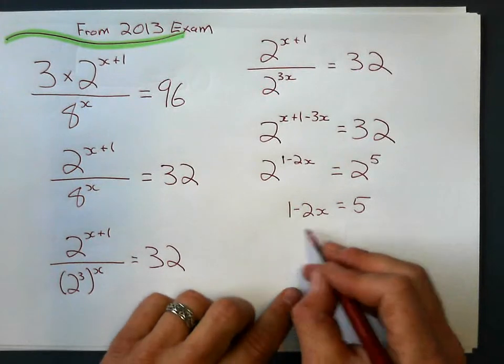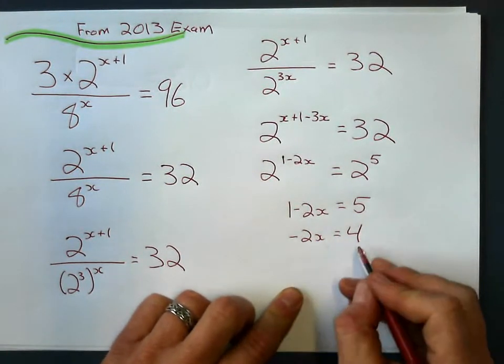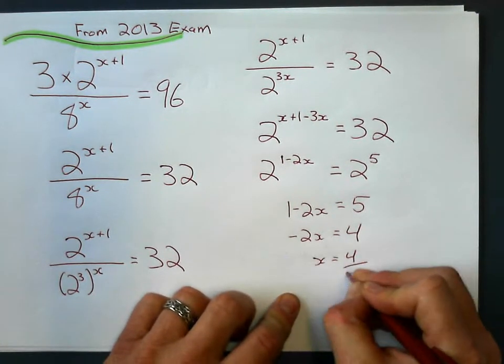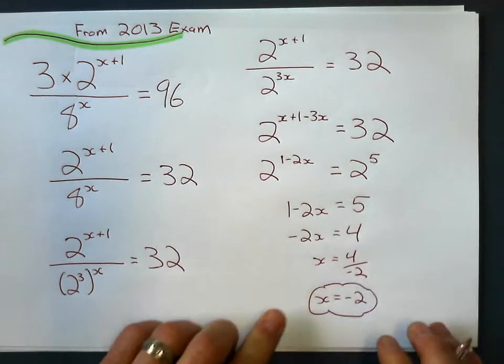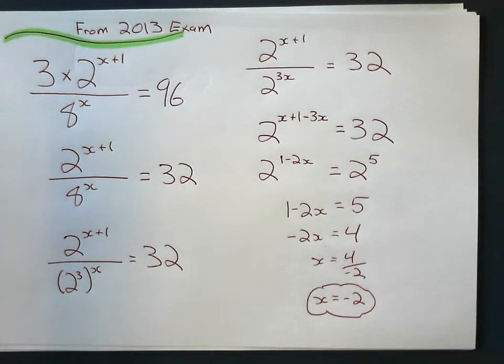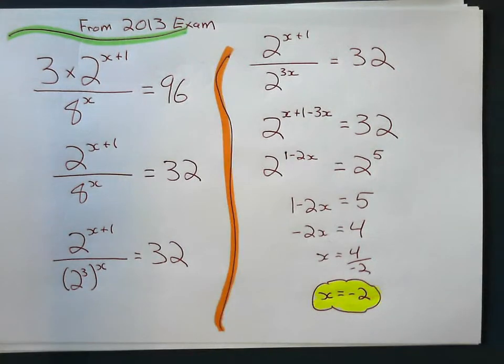I could handle that. Subtract 1 to the other side, and that means that negative 2x equals 4. Divide by the coefficient, divide 4 by negative 2, and I get negative 2 again. So I did manage to do that one without logarithms as well. That's it for now. Good luck.